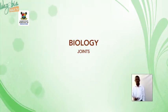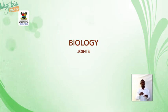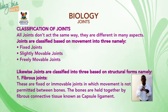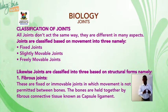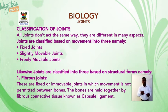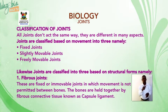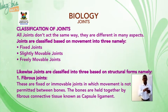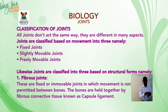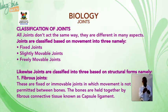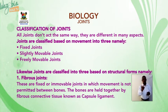Welcome back, still on joints. Classification of joints: all joints don't act the same way; they are different in many aspects. Joints are classified based on movements into three types: fixed joints, slightly movable joints, and freely movable joints. Likewise, joints are also classified into three major groups based on structural forms: fibrous joints, cartilaginous joints, and synovial joints.